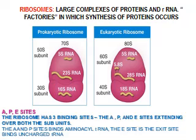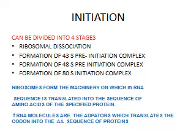There are three sites for binding on the ribosome: the A site, the P site, and the exit site. These extend over both subunits. Initiation can be divided into four stages: ribosomal dissociation, formation of the 43S pre-initiation complex, formation of the 48S pre-initiation complex, and finally the re-association of the two subunits to form the 80S initiation complex.